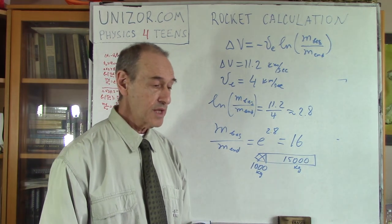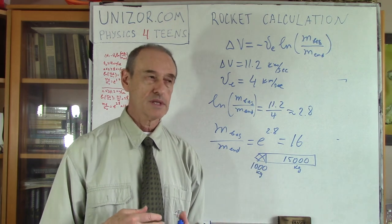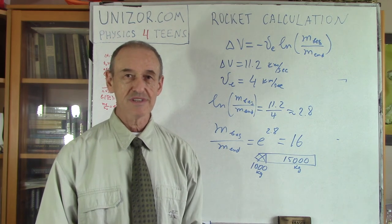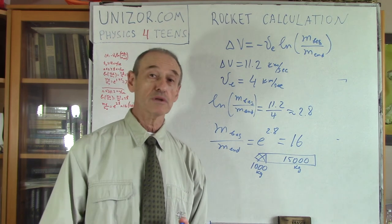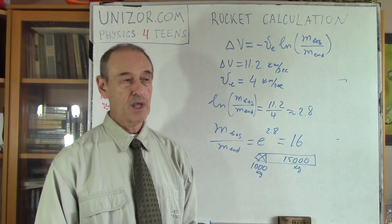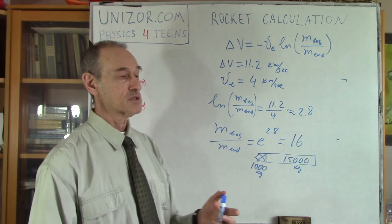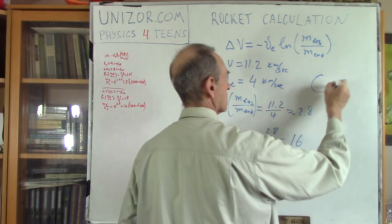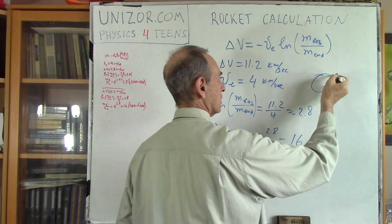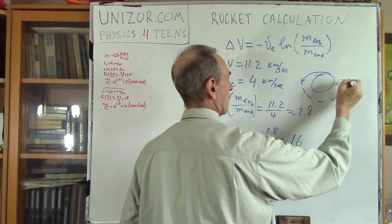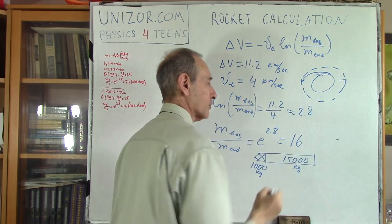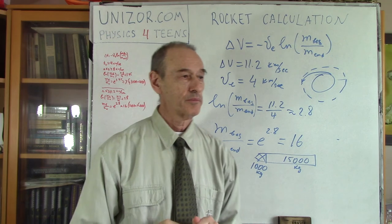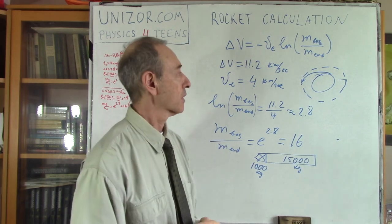Now these are obviously very, I would say, teaching kind of calculations. The real calculations, the real rocket science is much more complex, obviously. Because for instance, to launch the satellite on the orbit, if this is Earth, you basically launch it like this. So you have to calculate the speed a little bit more involved in detail conditions.